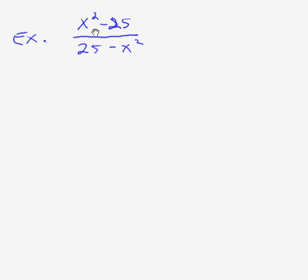And what we have is x squared minus 25 over 25 minus x squared. What's significant and important about this example is that the numerator and the denominator are opposites of each other. If I were to add the two of them together, we would get 0. That's opposites or additive inverses.